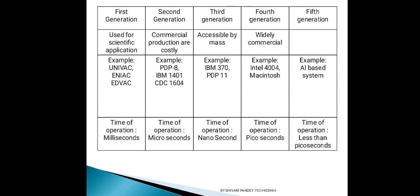Applications की बात करें तो first generation computer scientific applications के लिए use होता था। Second generation computer बहुत costly था। Third generation computer की cost कम होने की वजह से masses इसको access कर सकती थी। Fourth generation computers are widely commercial क्योंकि इनकी cost बहुत कम है।